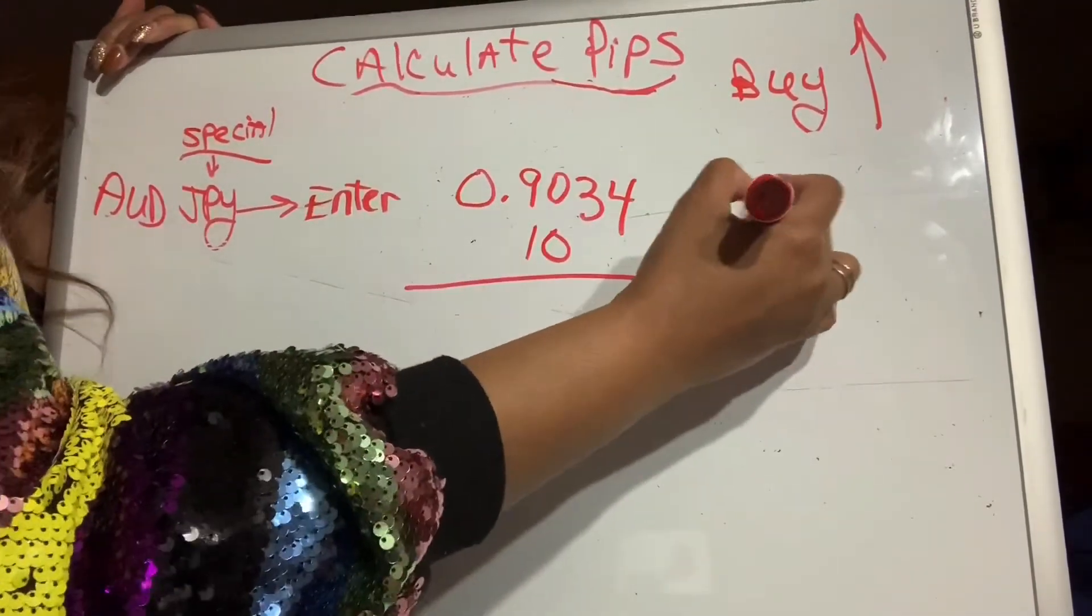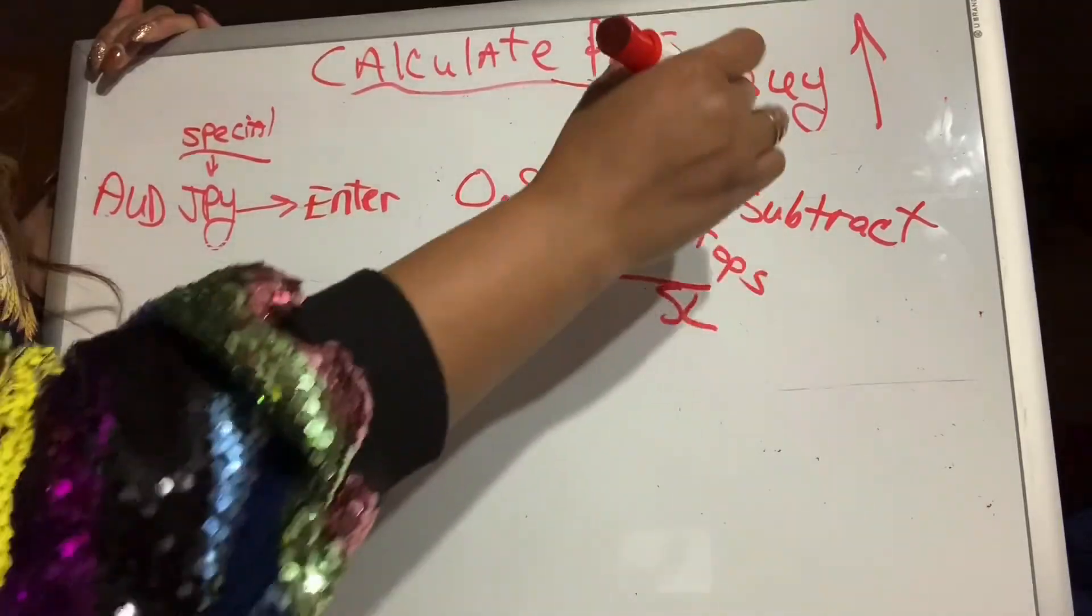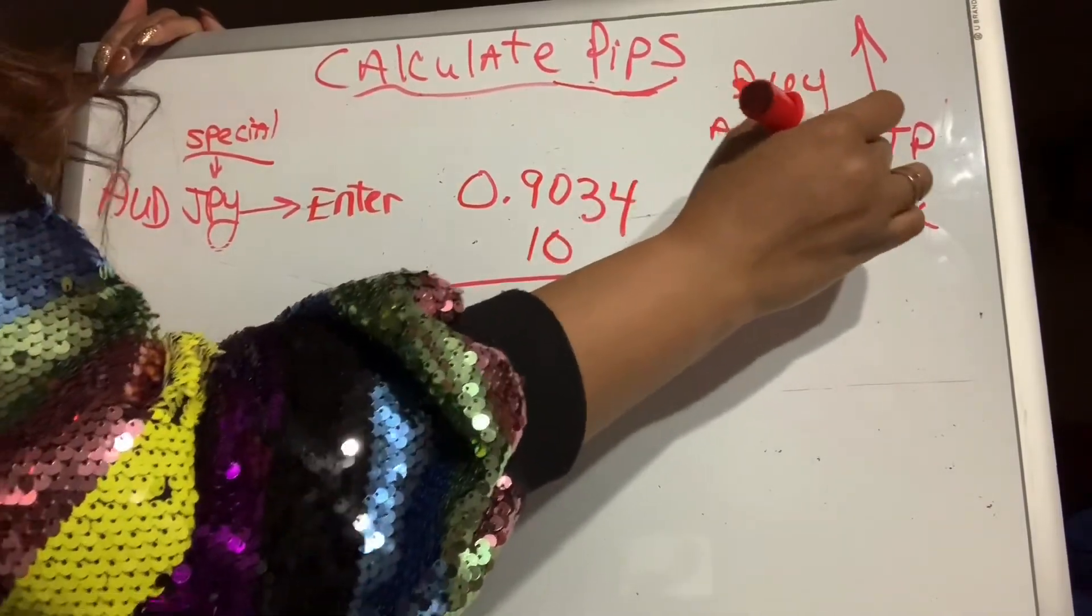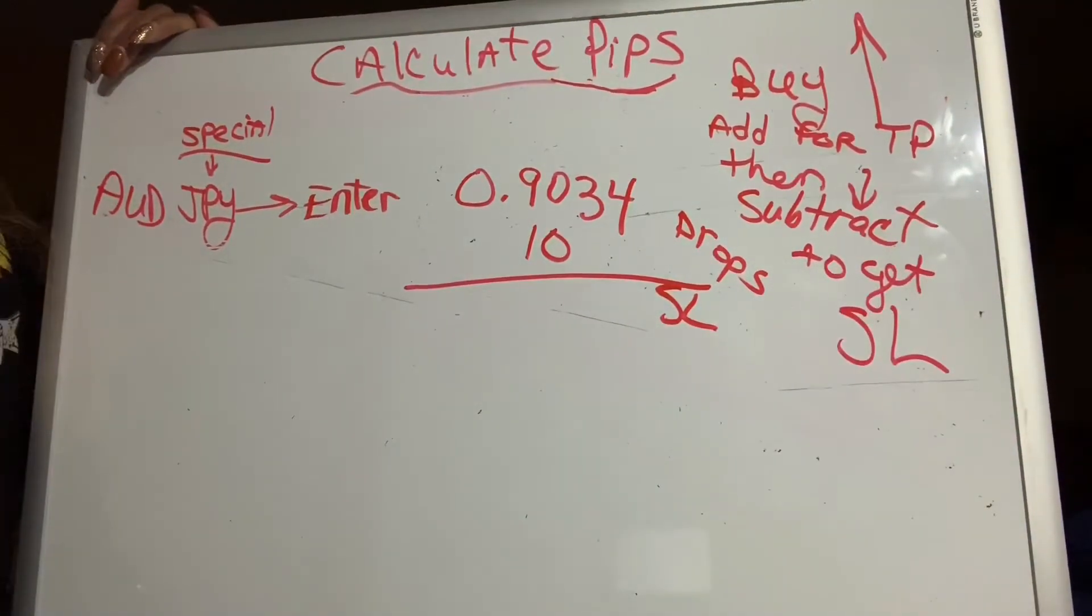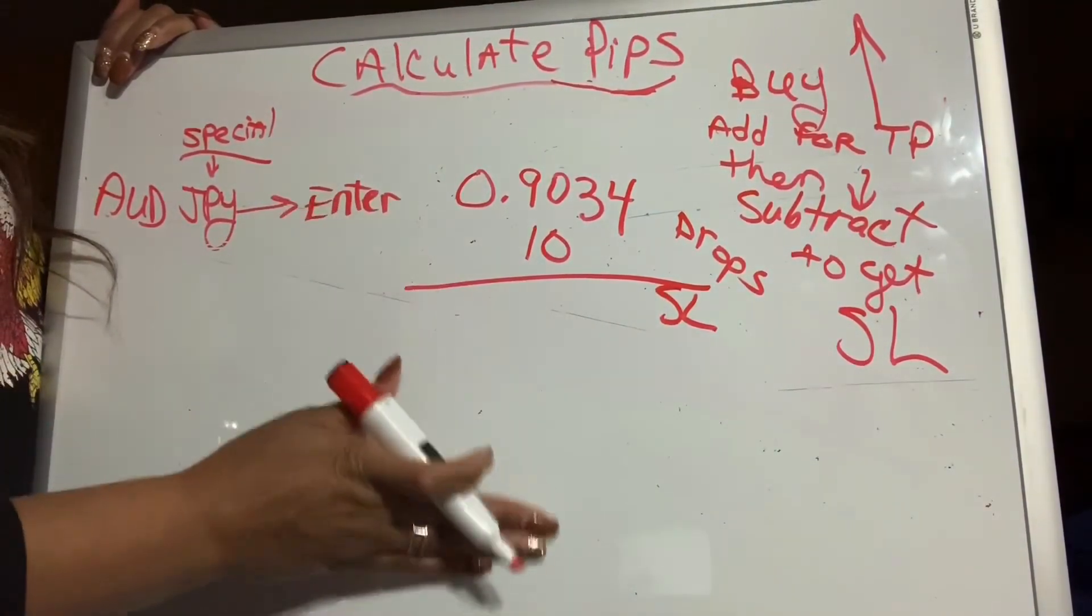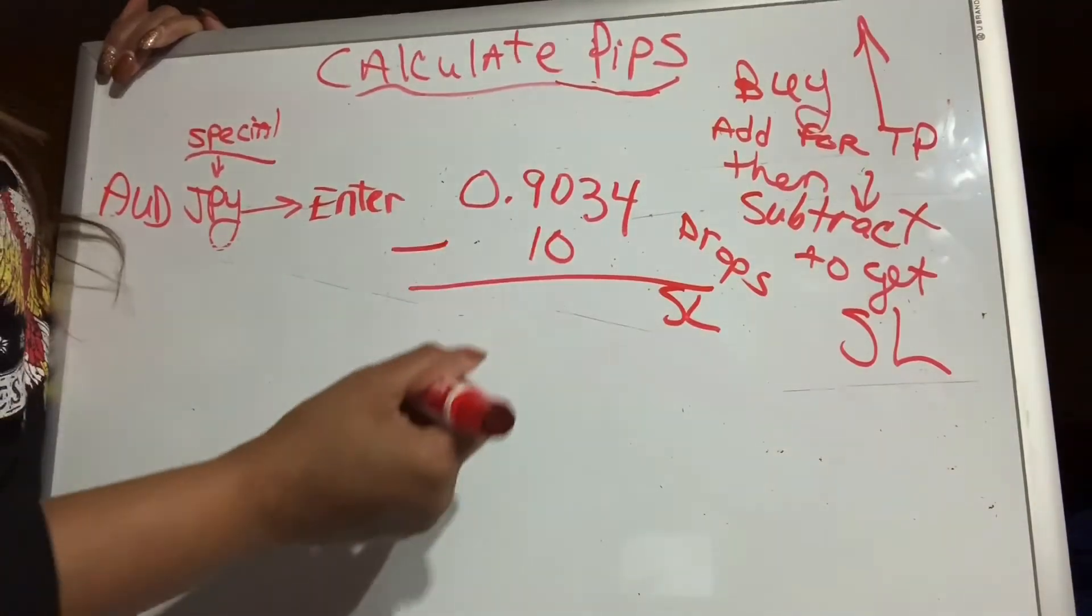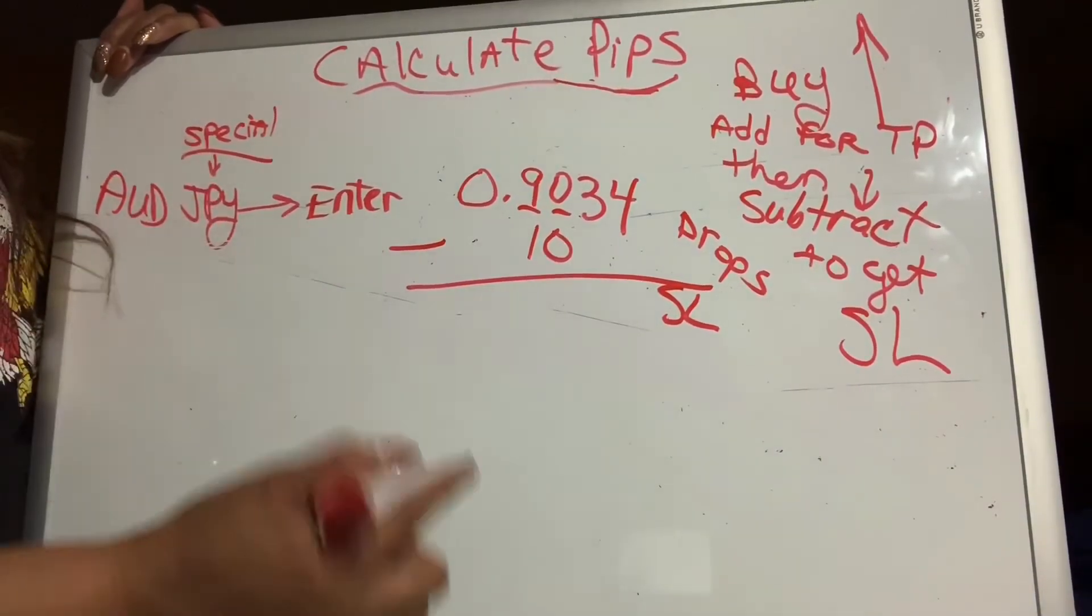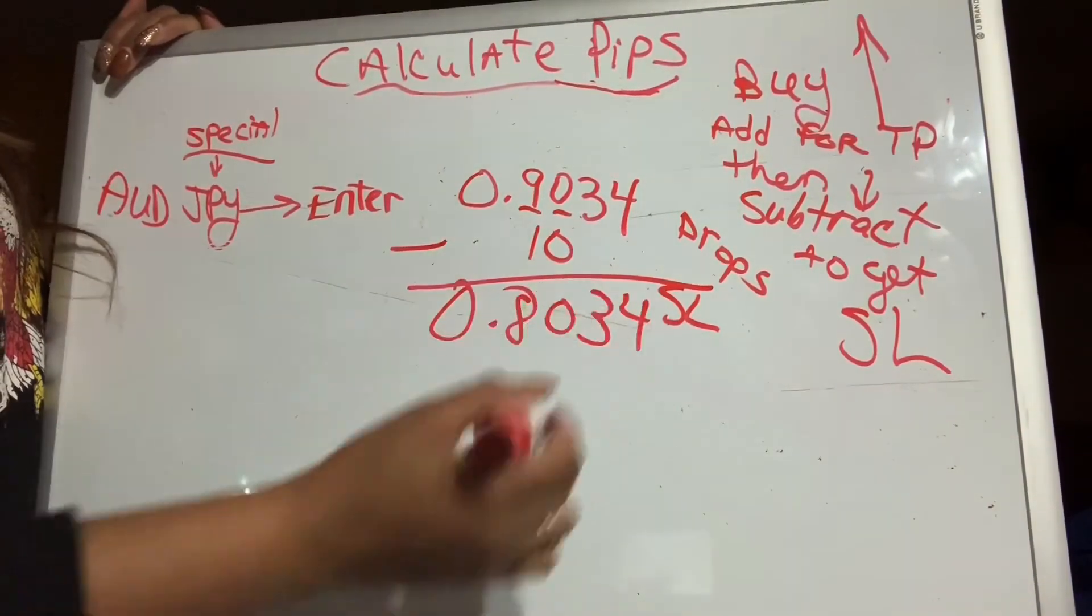If we add to give a take profit, we're going to do the opposite to get the stop loss. If you add for your TP, then subtract to get your SL, which is your stop loss. So we already got our take profit point because we were catching 25 PIPs going up. But on this one, I'm only going to risk myself about 10 PIPs. If it goes the wrong direction, just close me out. Don't take all my money with you. So I'm going to subtract 10 from the first and second number after the decimal because this is a JPY pair. It's a special pair. So bring down my four, bring down my three, bring down my zero. Nine minus one is eight. Bring down my zero. This is my stop loss.